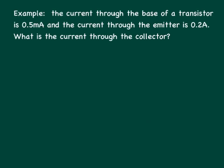So here's a quick example of the type of thing you might be asked. The current through the base of a transistor is 0.5 milliamps and the current through the emitter is 0.2 amps. What is the current through the collector? The first thing to know immediately is the units of this value here, it's in milliamps. The second thing to know is that they are asking you to calculate the current through the collector.